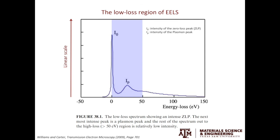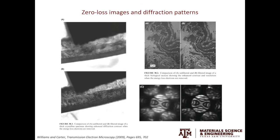Because the y-axis intensity is in the linear scale, the characteristic edges will be so weak you can hardly see them. Let's first focus on the zero loss peak to look at how it can help us to get better images and diffraction patterns.